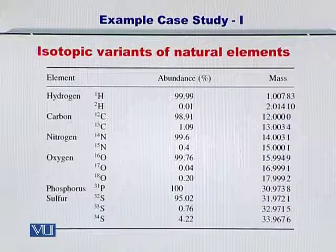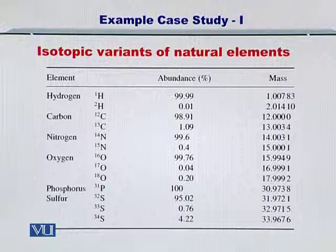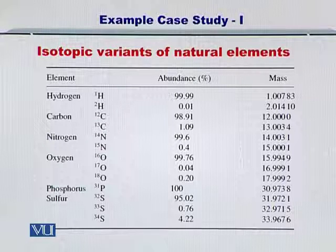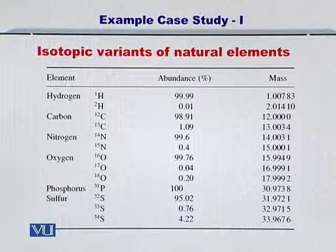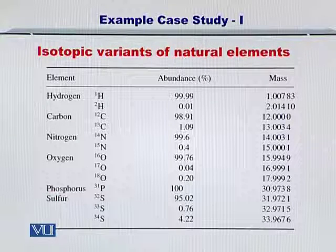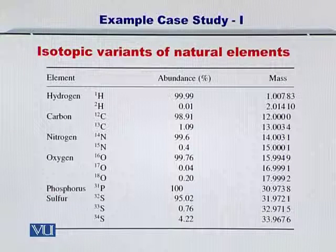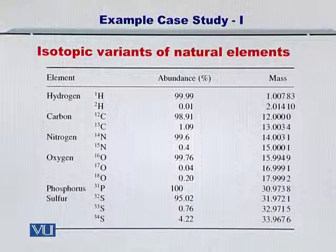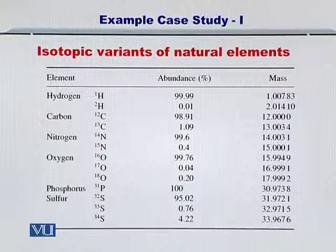Dear students, the naturally occurring elements in nature — for instance, hydrogen, carbon, nitrogen, oxygen, phosphorus, and sulfur — all have various isotopes. In the case of hydrogen, you have hydrogen-1 and hydrogen-2. So if you have two different isotopes, it means hydrogen may exist with two different masses or molecular weights.